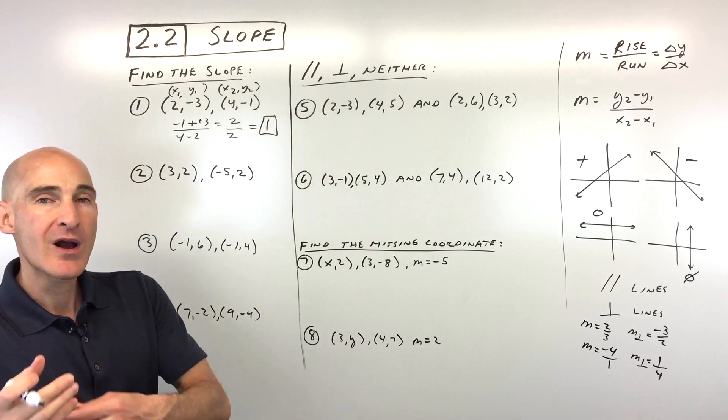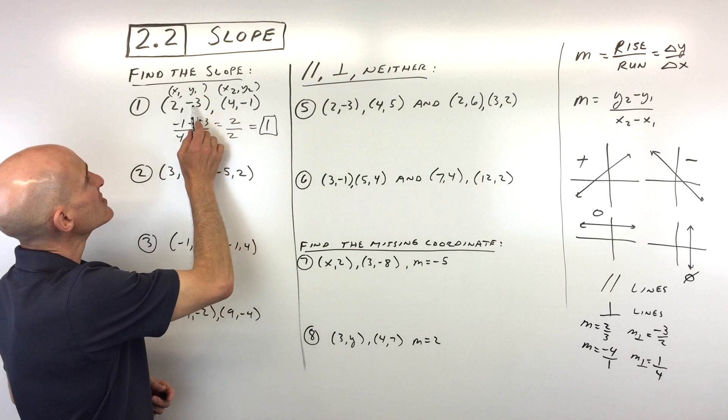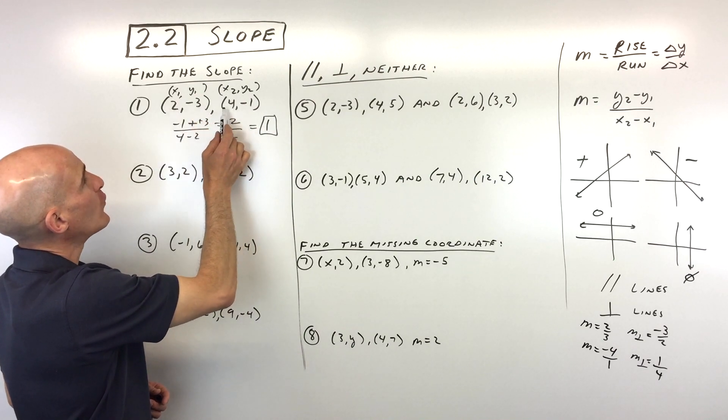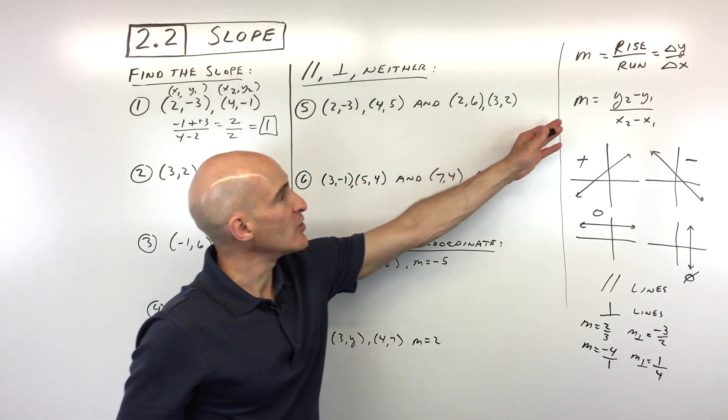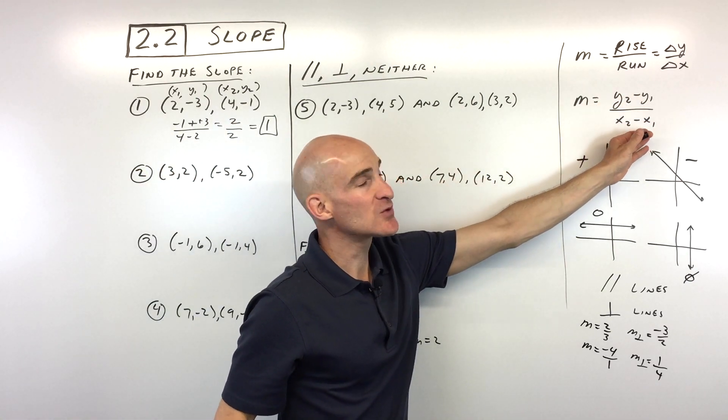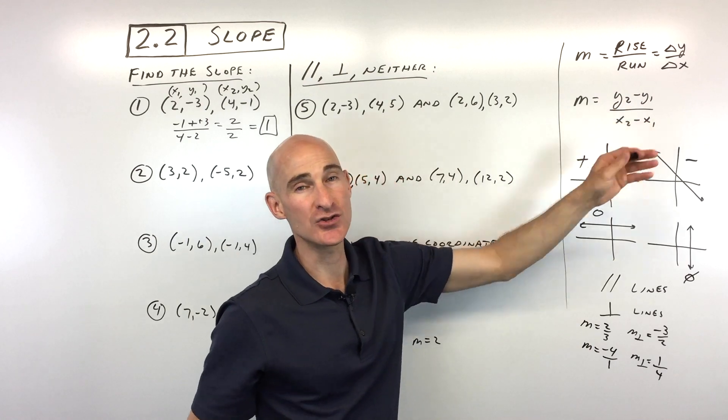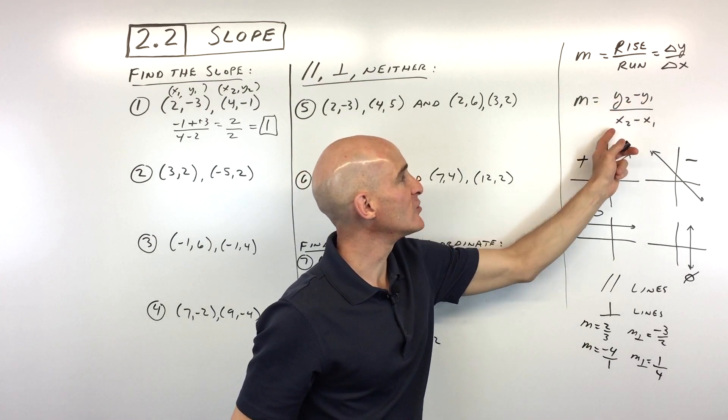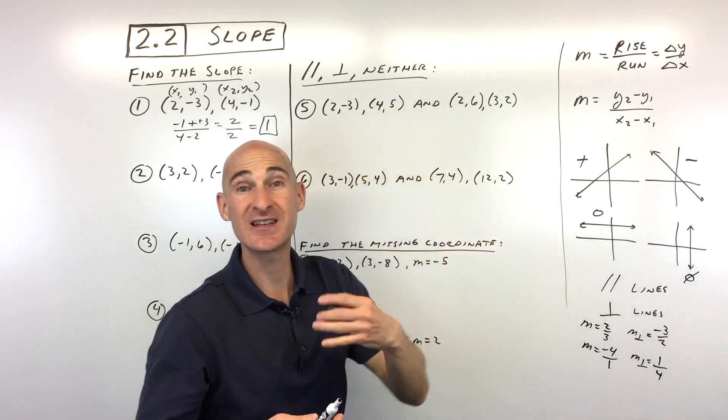Now if you want to play around with this a little bit and check your work, what you can do is reverse it, say -3 minus -1 over 2 minus 4. So instead of doing, like I was telling you here, y2 minus y1 over x2 minus x1, we're going to do y1 minus y2 over x1 minus x2. What you don't want to do is you don't want to switch it up midway, like y2 minus y1, and then do x1 minus x2. You want to stay consistent, right?